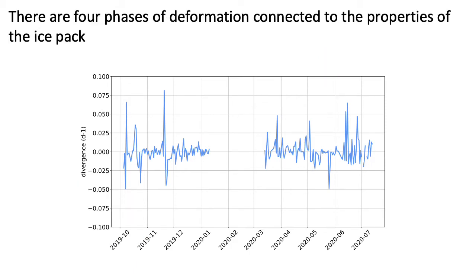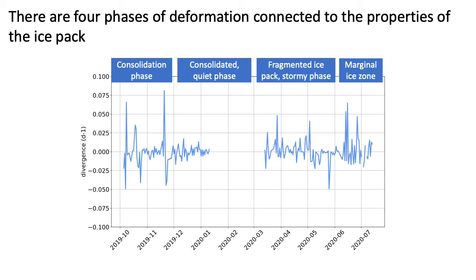Looking at this time series we can identify roughly four periods in which deformation reveals similar patterns. Those periods are related to the properties of the ice pack, mainly how consolidated the ice was, because this influences how easily it breaks. During period 1, the autumn period, when the ice was still quite mobile, we had several strong events, often in connection to strong storms. When the ice was more strongly consolidated in winter, it was more quiet.